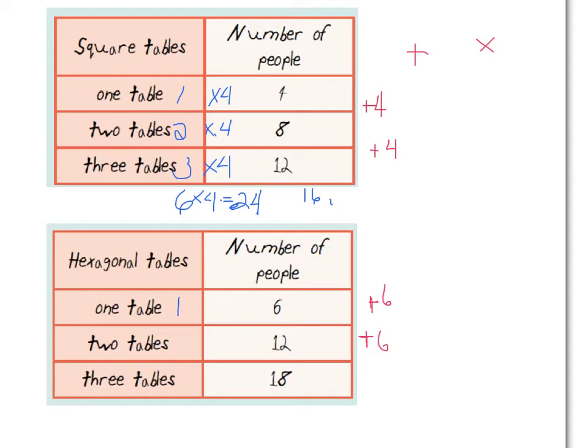However, if I went across the table from 1 table, like across the t table, I mean, if I had 1 table, what would I do to get to 6? If I had 2 tables, what would I do to get to 12? If I had 3 tables, what would I do to get to 18? And in this case, it looks like I'm going to be multiplying by 6. 1 times 6 is 6. 2 times 6 is 12. 3 times 6 is 18.